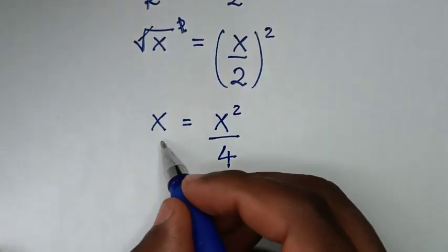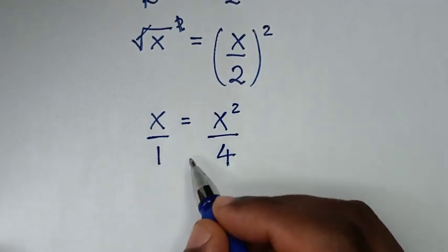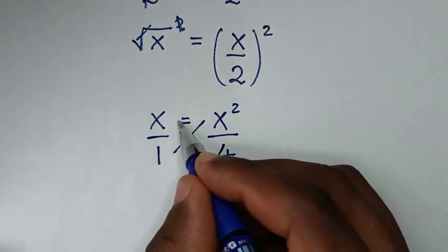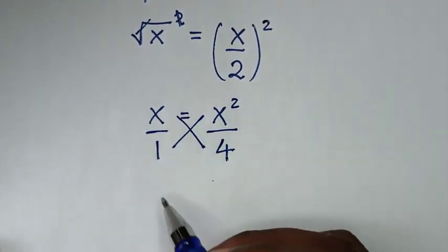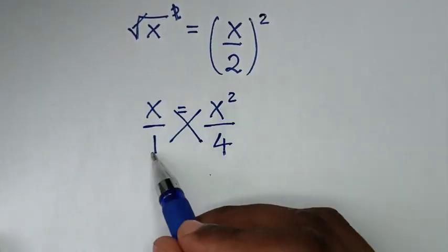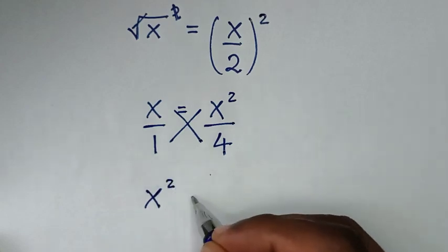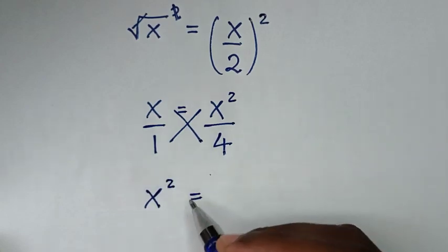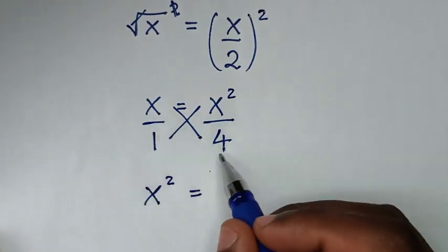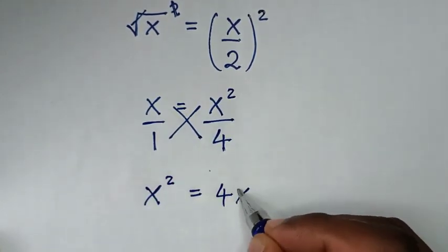Then since x is the same as x over 1, we'll cross multiply. It will be x squared times 1, which is x squared, is equal to x times 4, which is 4x.